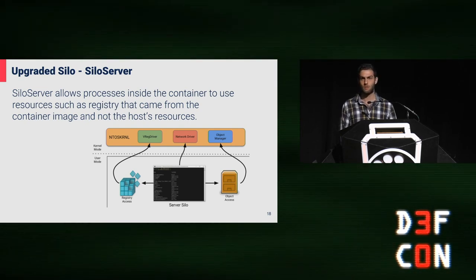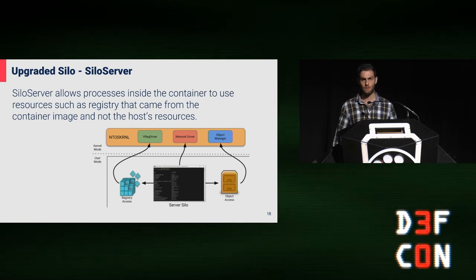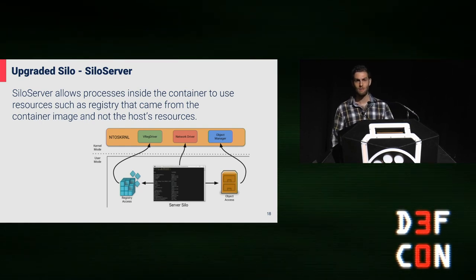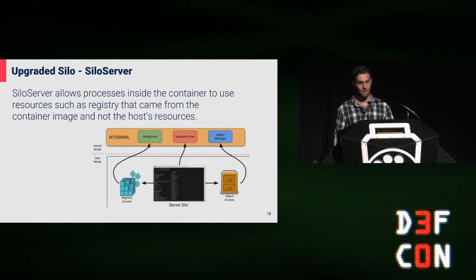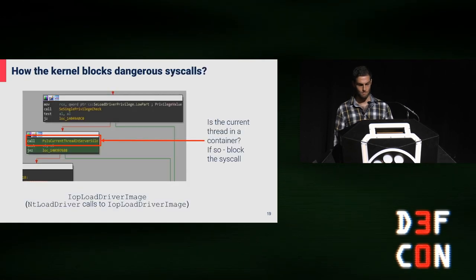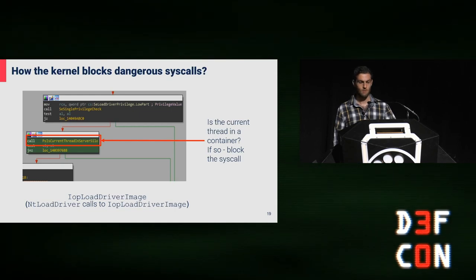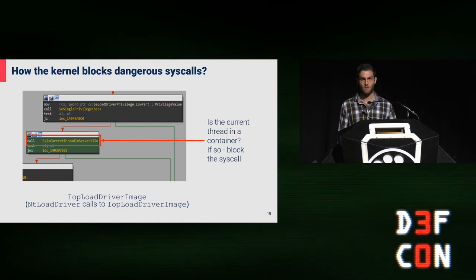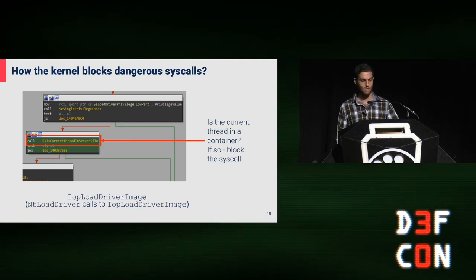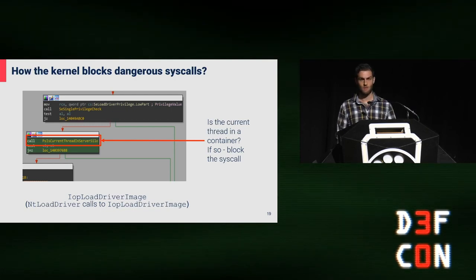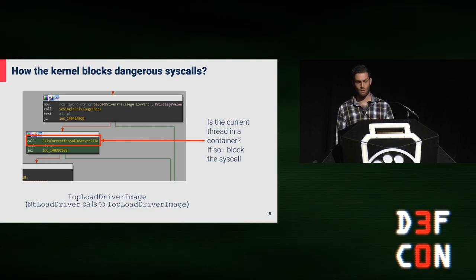But this isolation is not enough, because the container can interact directly with the kernel. So some validations are required to be added in the kernel itself. If a container does a dangerous syscall — for example, loading a driver that can impact the host — the kernel won't allow this activity. As you can see in the slide, it validates if the thread that did the syscall is inside a server silo, which means it is inside of a container.